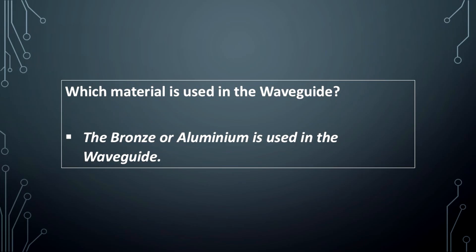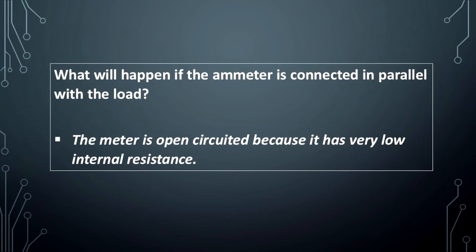What will happen if the ammeter is connected in parallel with the load? The meter is open-circuited because it has very low internal resistance.